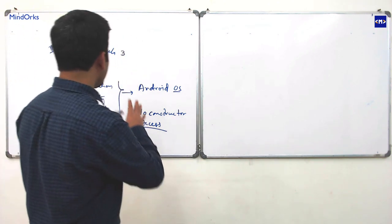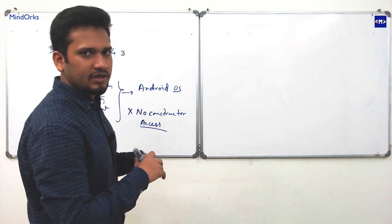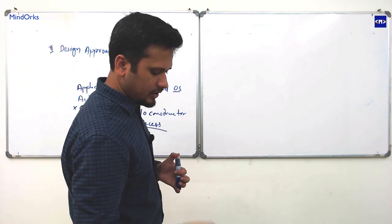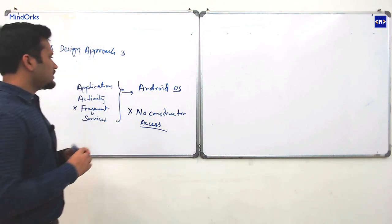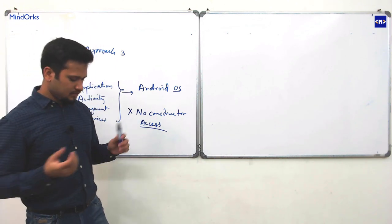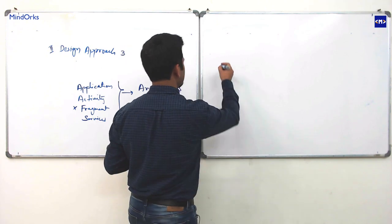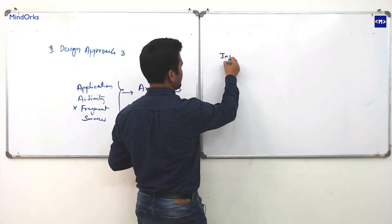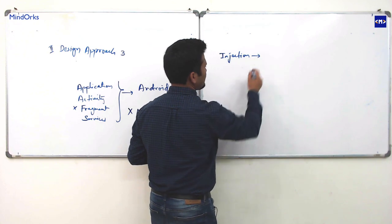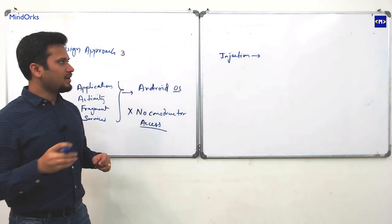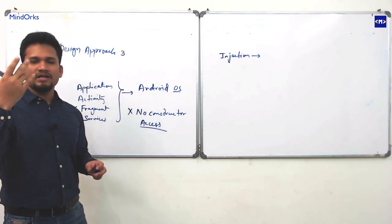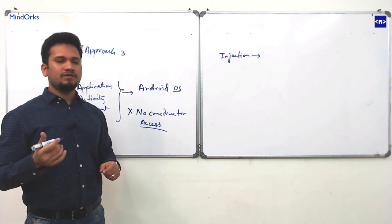Since you cannot access the constructor, you cannot provide dependencies to these classes from outside through the constructor. This is a major setback to applying a better dependency management solution. We need to think differently — and for that there is a term: injection.